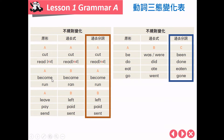再往下看：become, became, become；run, ran, run——第三态跟第一态长得一样。继续：leave, left, left；pay, paid, paid；send, sent, sent——这些动词的第三态跟第二态长得相同。